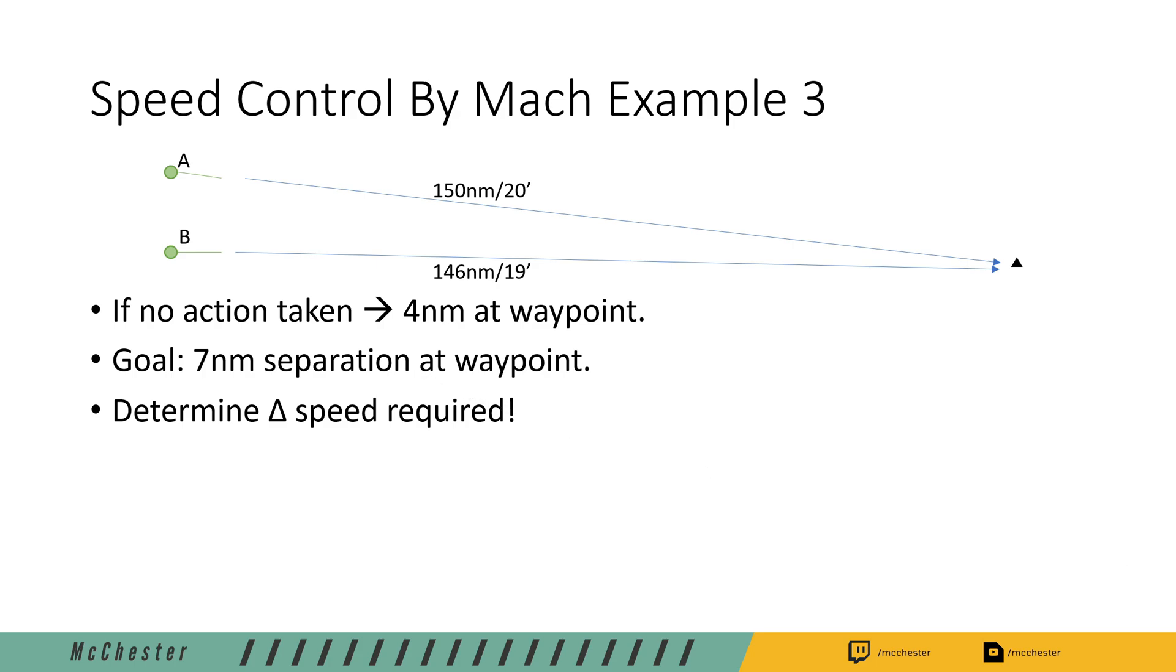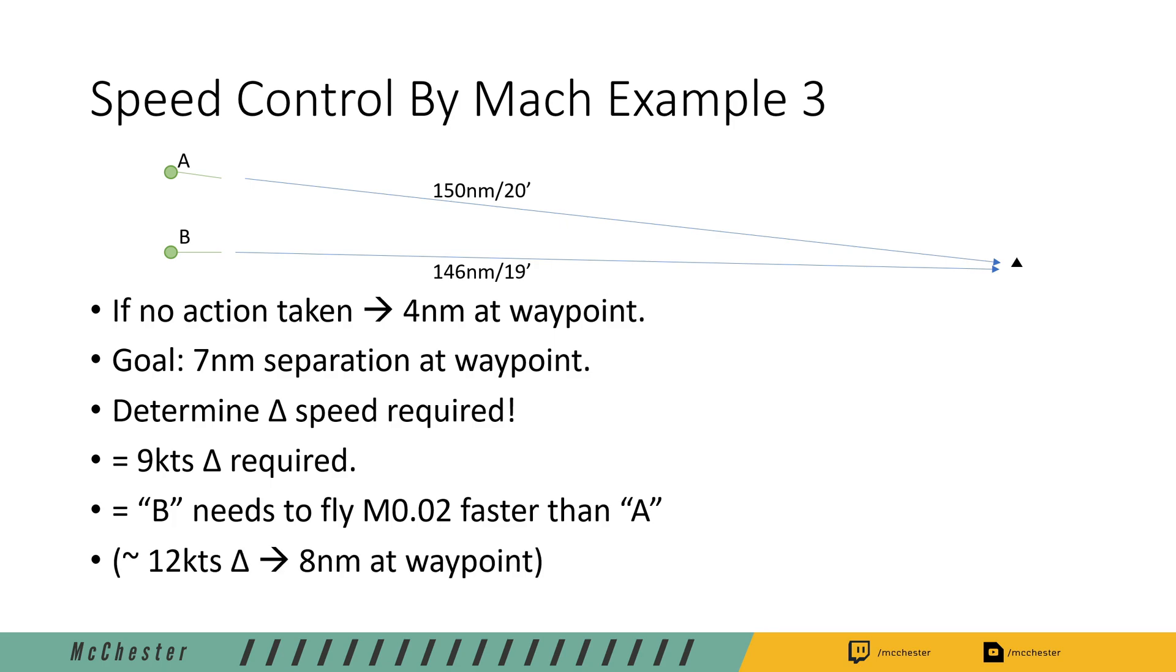The solution for this example is as follows. In order to achieve a separation of seven nautical miles we need a delta speed in ground speed of nine knots. That means that aircraft B has to fly Mach 0.02 faster than aircraft A. This is going to equal a delta ground speed of 12 knots and a lateral separation of eight nautical miles at the waypoint.